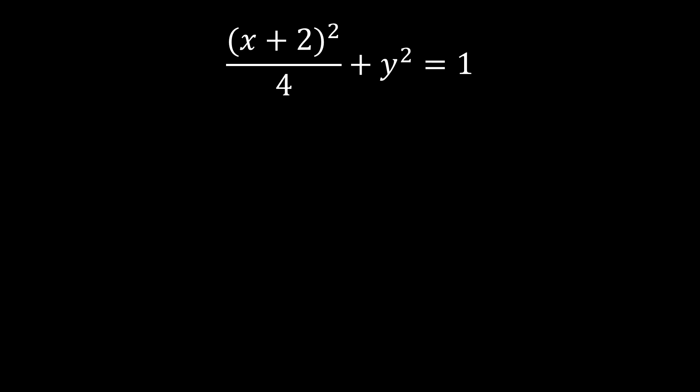As you've noticed, we have one fraction which has a denominator but the other one does not — it is understood we have a 1 there. The aim is to convert this into the general form of the equation of our ellipse. Since 4 is the only visible denominator, we'll be multiplying each of the terms by 4.